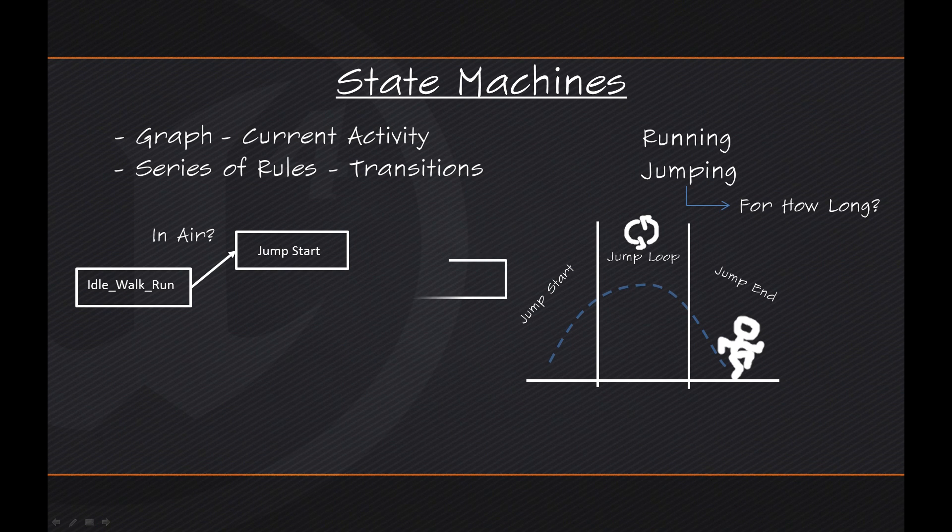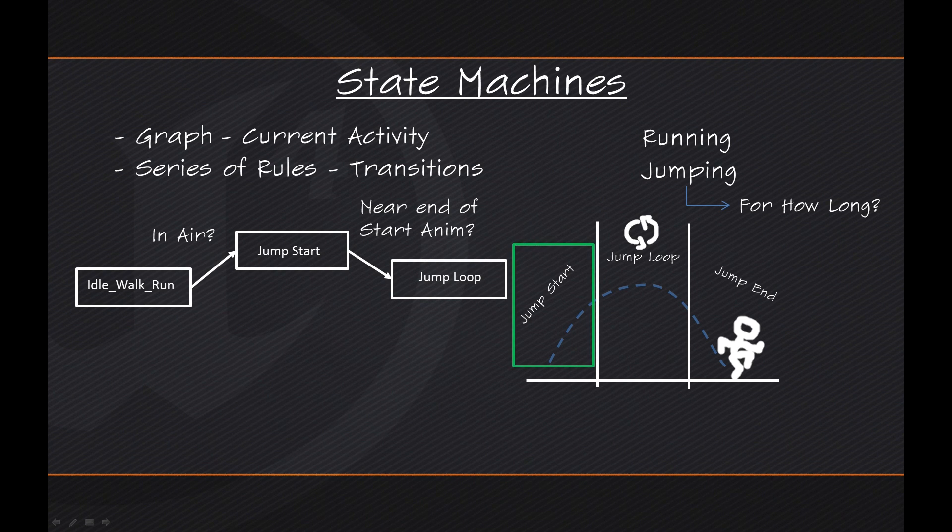Then we would have another State which we will call Jump Loop. The Character will always go from Jump Start to Jump Loop. It is just the next thing that he is going to do. It is the nature of the transition. But how? Under what circumstance? What is the transition rule to get there? Really, we are going to keep it very simple and all we are going to say is when the Character gets near the end of the Jump Start animation, continue on to the Jump Loop automatically. Now, remember how we took our Jump and we cut it up into three parts? Once we get towards the end of the Jump Start animation, we can just automatically go ahead and move him over to the Jump Loop animation.